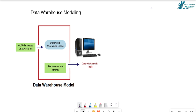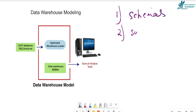Hello everyone, welcome back. Today we are going to talk about data warehouse modeling. Data warehouse modeling is a process to design a schema in detail and summarize information of the data warehouse. First, we will design a schema in detail form, and second, we will summarize information to design the data warehouse.